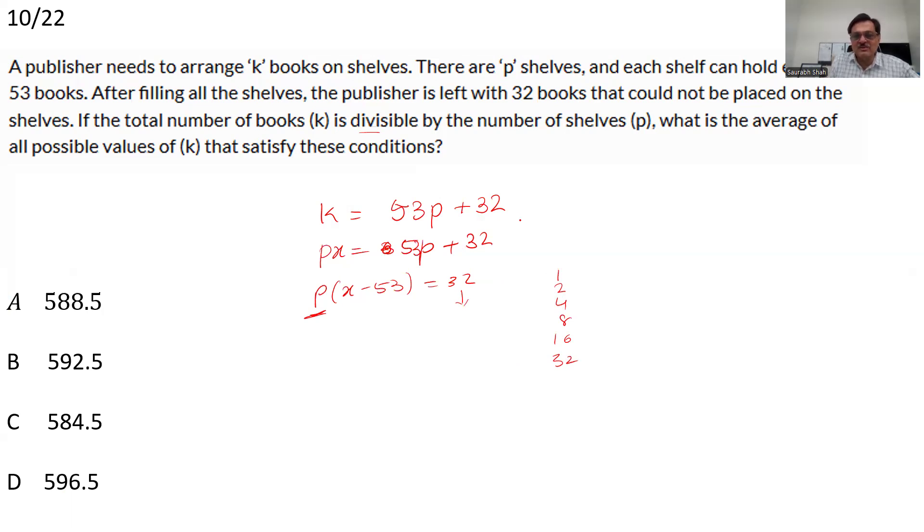So these are the possible values of P. But the question now is interesting. What is the average of all the possible values of K? So we have 6 possible values of K. Sorry, P. We have 6 possible values of P. So accordingly we will have 6 corresponding possible values of K. So K if I now write, let's write here, K is equal to 53 into P. Let's say 1 for P plus 32. It could also be 53 into 2 plus 32. And we can similarly write 53 into 32 plus 32.